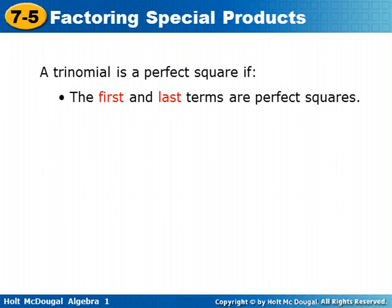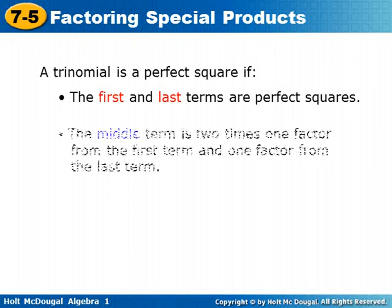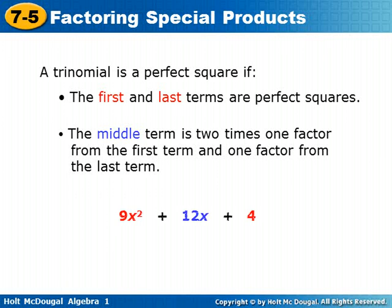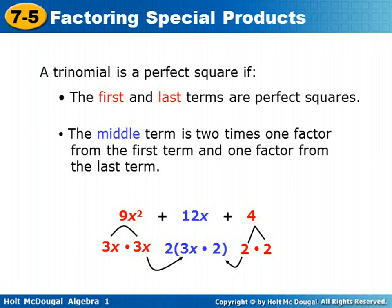A trinomial is a perfect square if the first and last terms are perfect squares. The middle term is 2 times one factor from the first term and one factor from the last term. So for instance, 9x squared plus 12x plus 4: 9x squared is a perfect square — 3x times 3x, or 3x squared. 4 is a perfect square — 2 times 2, or 2 squared. The middle term has to be 2 times whatever was being squared in the first term times whatever was being squared in the second term, so 2 times 3x times 2.